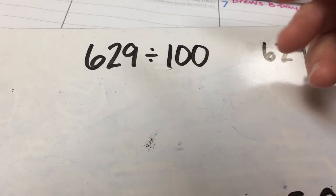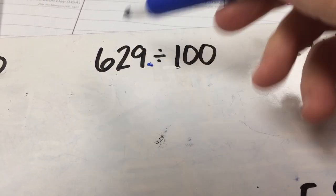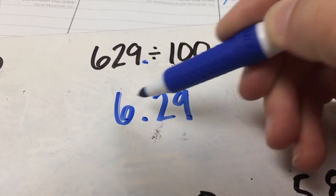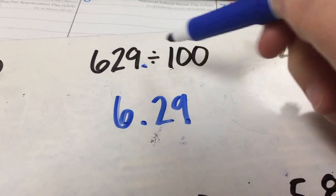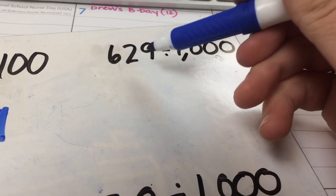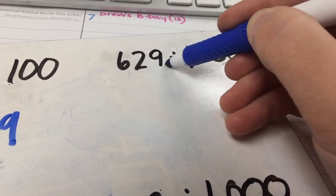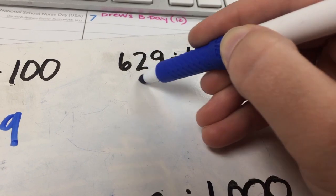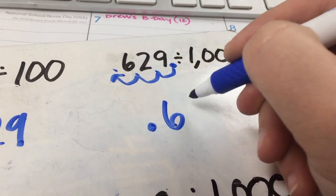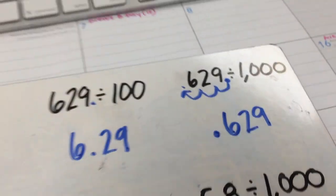Whenever you do it with 100, same thing. Unspoken decimal — there are two zeros, so we need to hop it over twice. Our number becomes 6.29. See, this number is much smaller than the original, so you know you're dividing. And for 629 divided by 1,000 — three zeros, unspoken decimal point. We jump one, two, three places, and our answer is 0.629, or 629 thousandths.